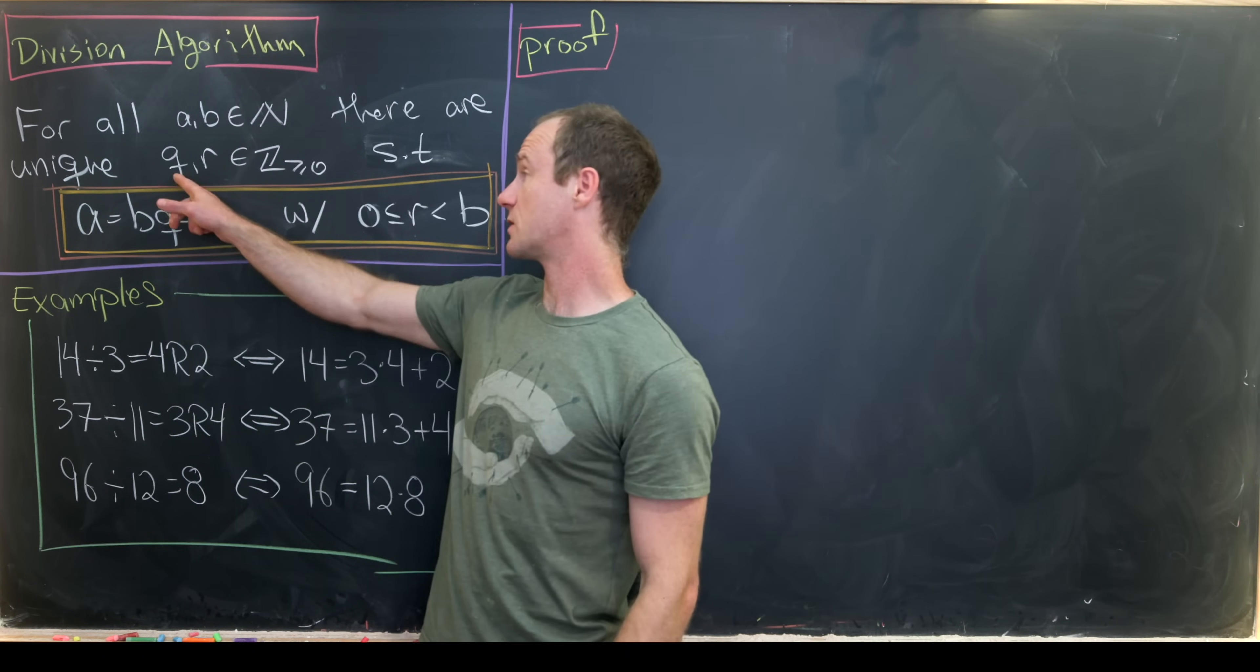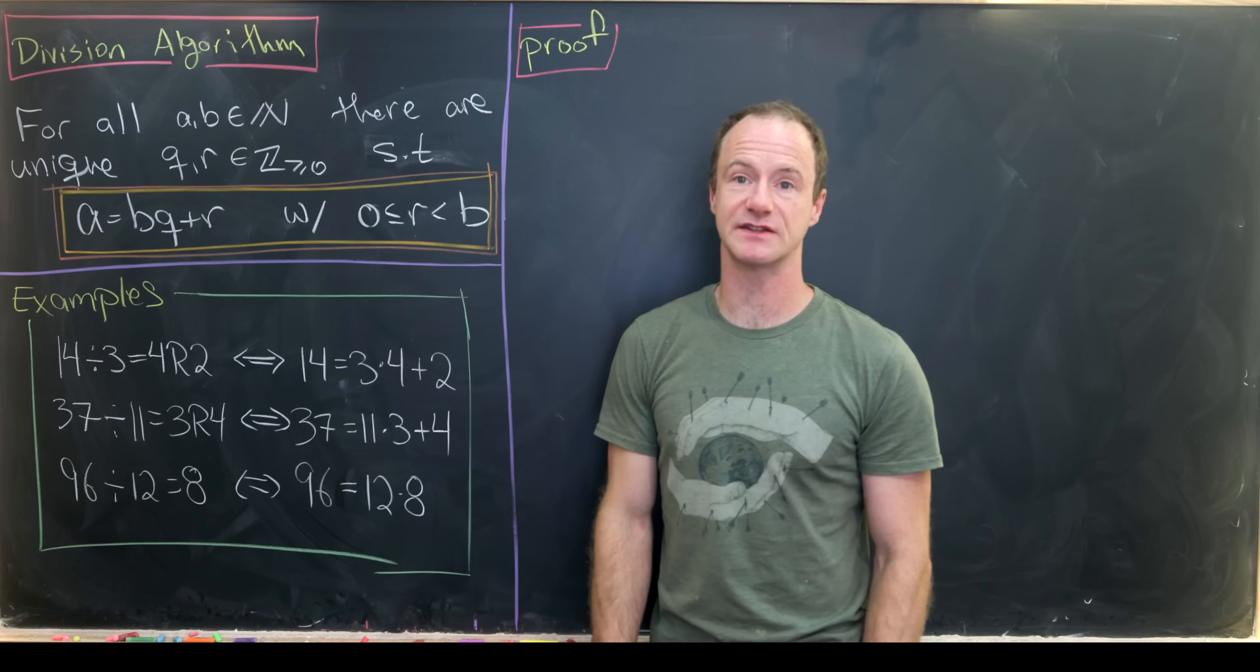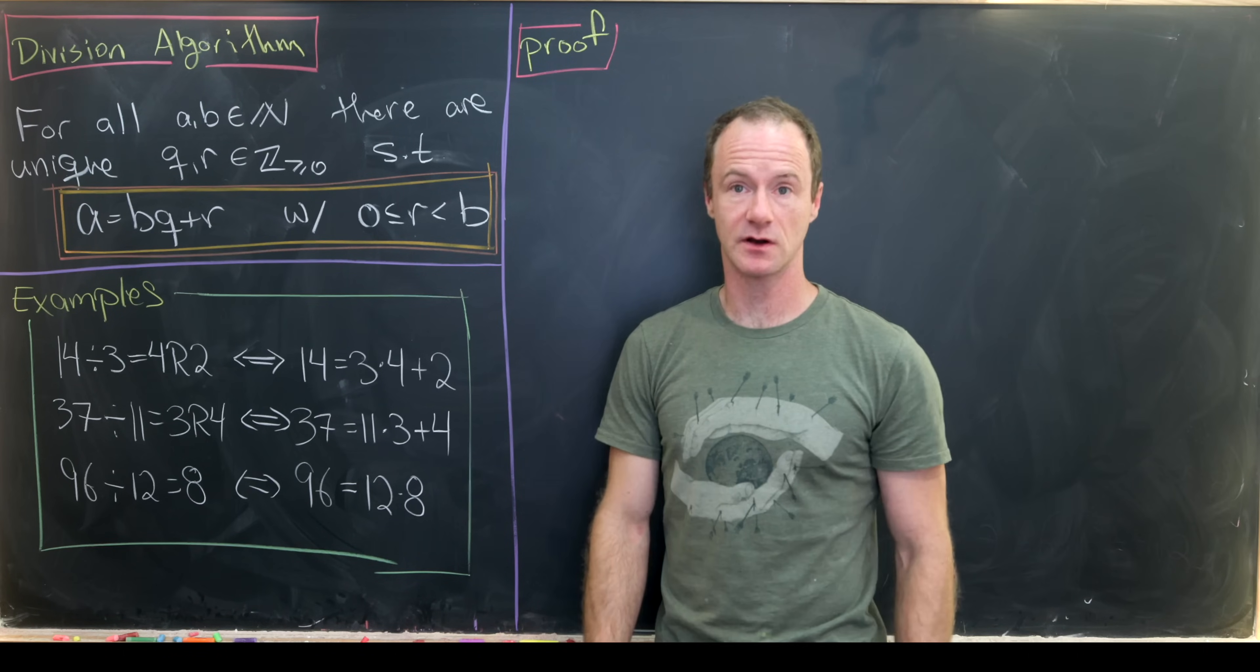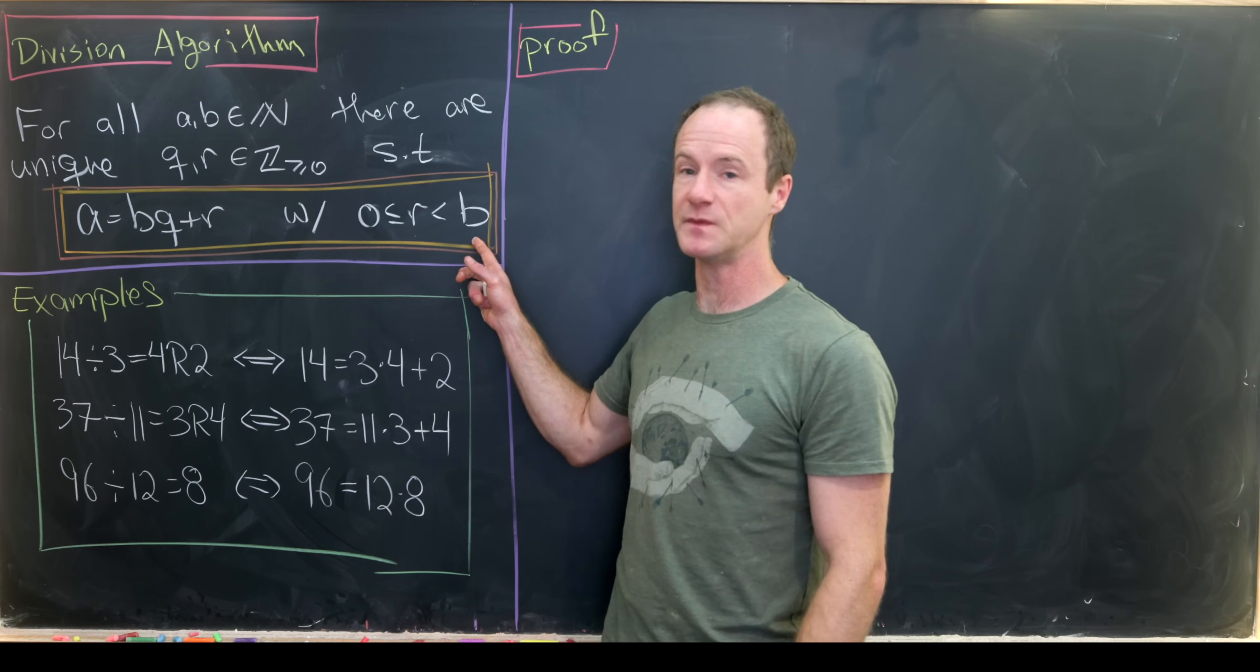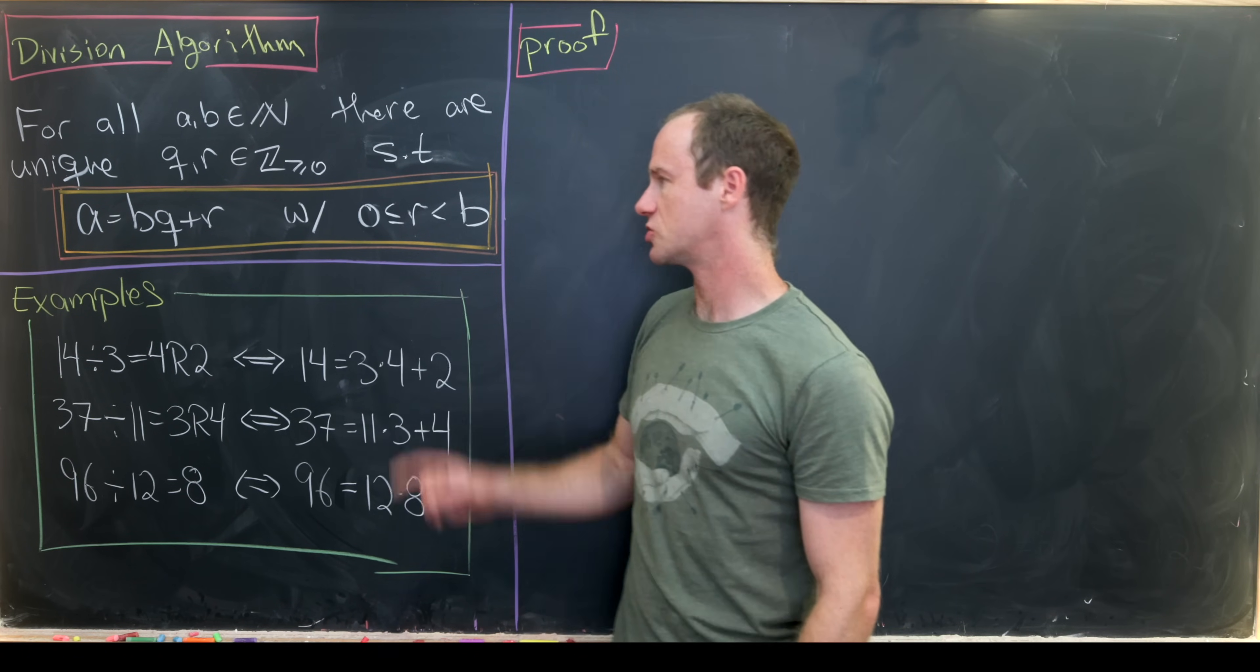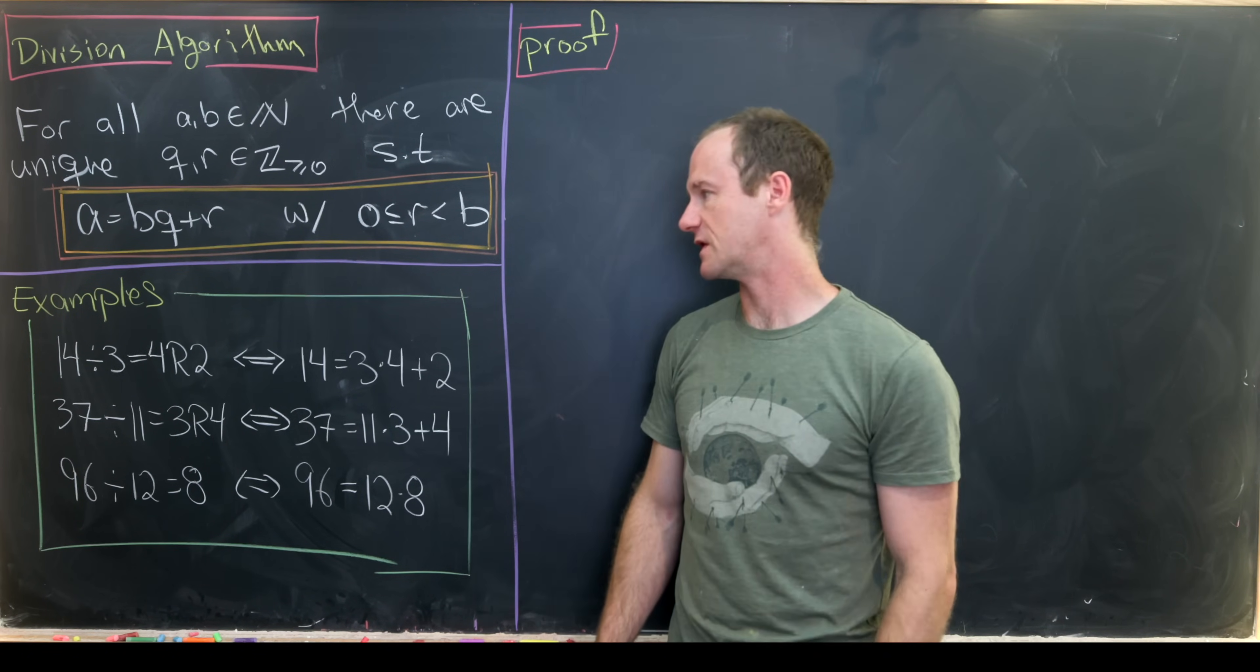And this number q is known as the quotient whereas this number r is known as the remainder. The fact that r is known as the remainder gives us an idea of why we have this bound here, because you would never want a remainder which is larger than your divisor. And b here is playing the role of the divisor.